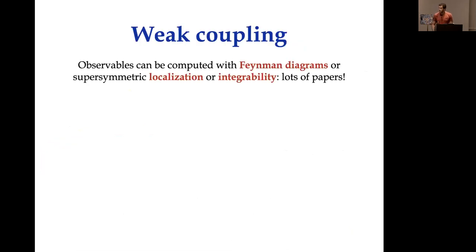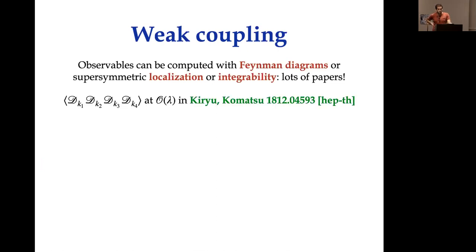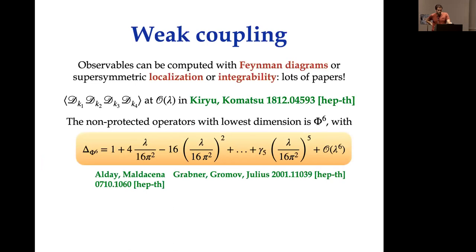We have a coupling constant we can tune. At weak coupling, one can compute correlators using Feynman diagrams or more sophisticated techniques such as supersymmetric localization or integrability. I will focus on two observables: the first is the four-point function of four half-BPS operators, computed to first non-trivial order — order lambda — in a paper by Kiryu and Komatsu.